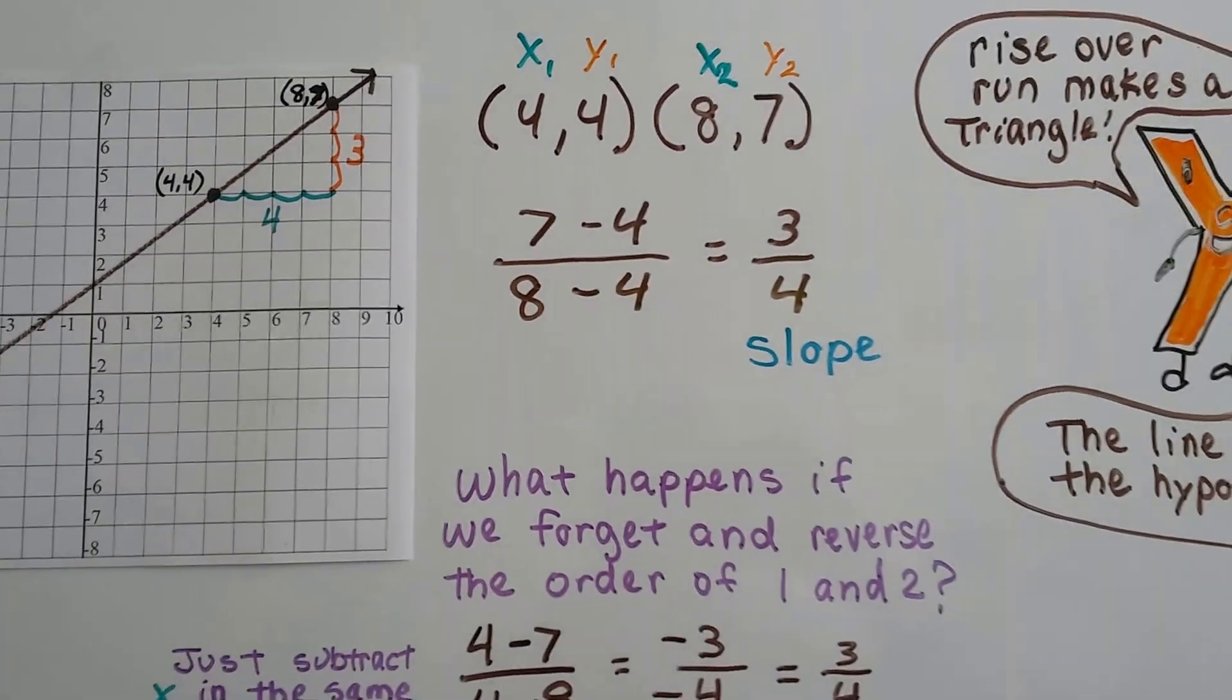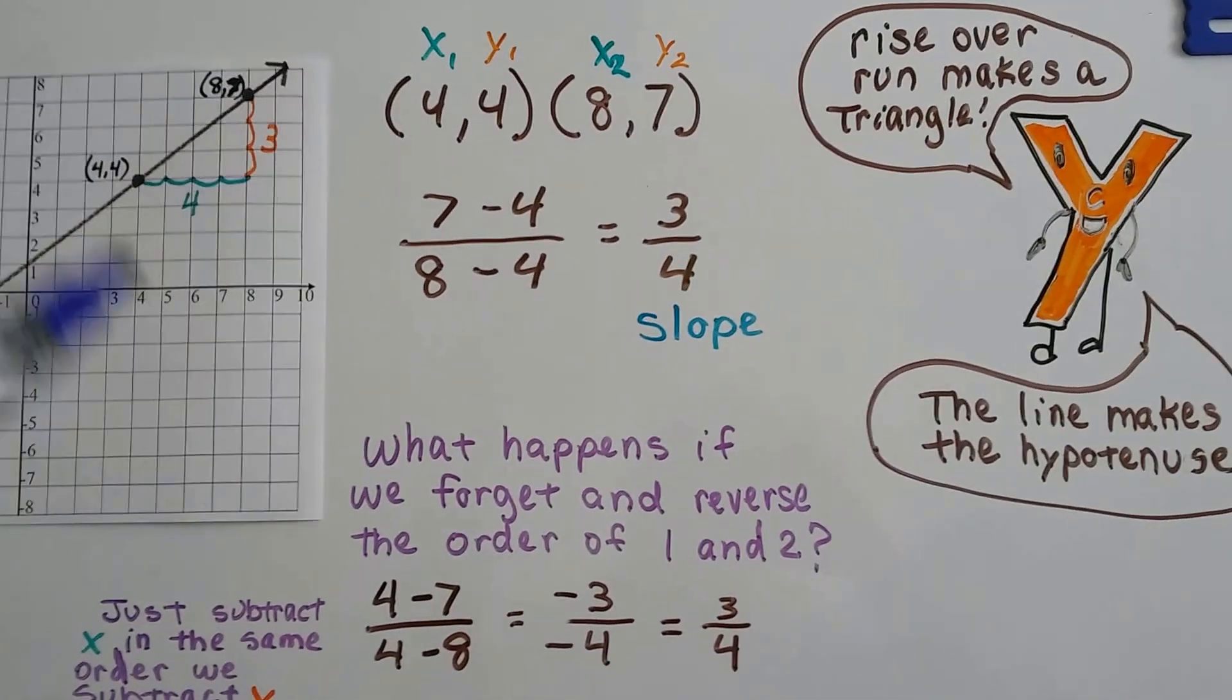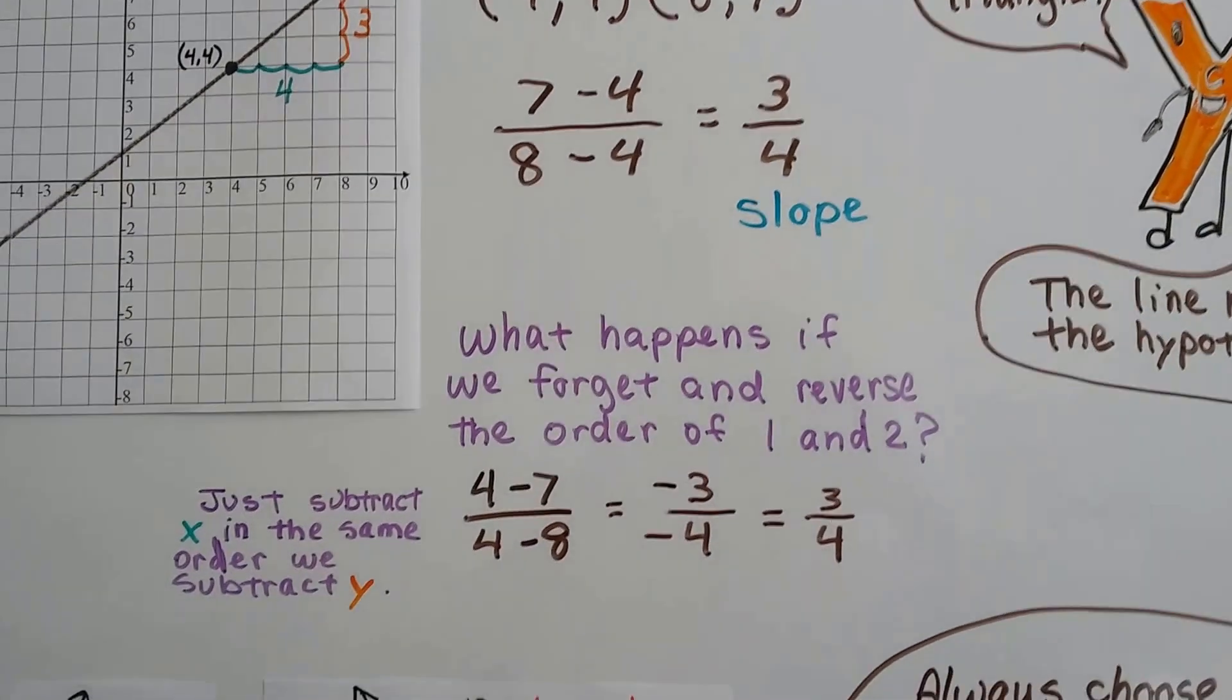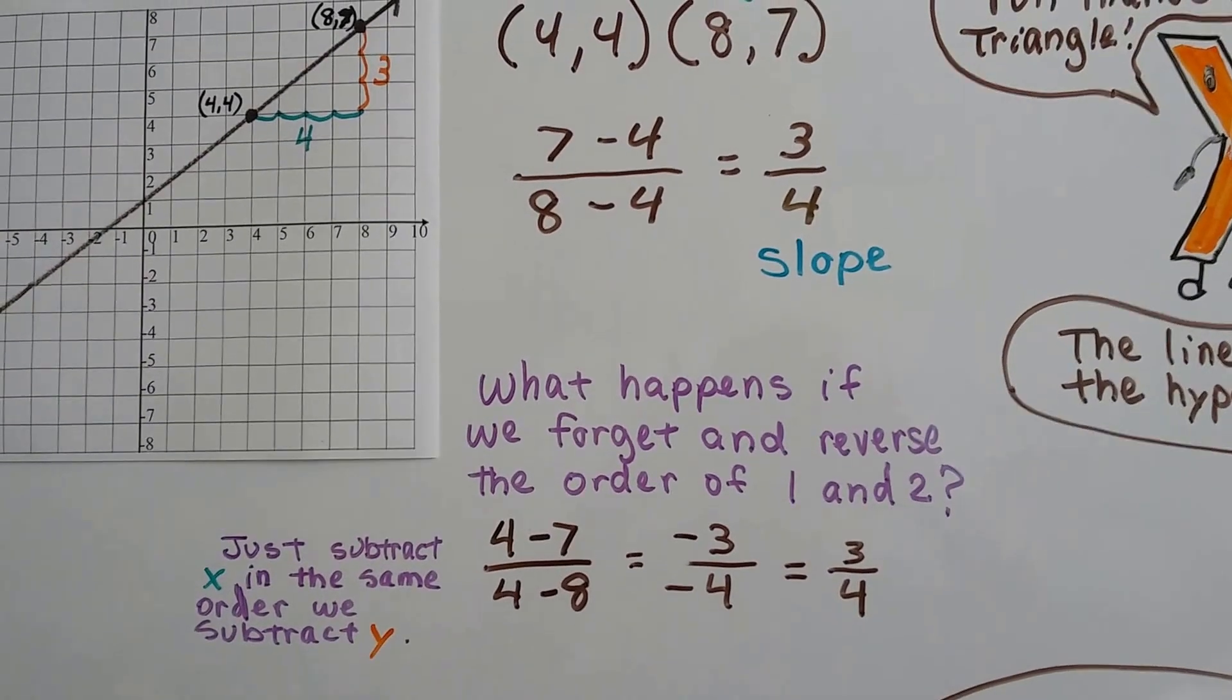So the rise over the run makes a triangle, doesn't it? And the line makes the hypotenuse of that triangle. It makes a right triangle, doesn't it? It's laying on its side. So what happens if we forget and reverse the order of x1, y1, and x2, y2?